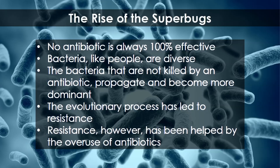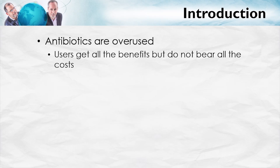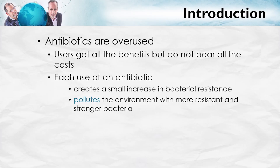We are not entirely innocent in this process — resistance has been helped by the overuse of antibiotics. Why are antibiotics overused? The fundamental reason is that users get all the benefits but do not bear all of the costs of antibiotic use. Each use of an antibiotic creates a small increase in bacterial resistance, at least in a probabilistic sense, but bacteria don't stay in one place or one body — they spread throughout the environment and throughout the world.